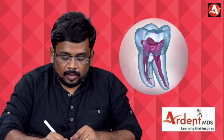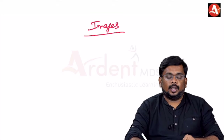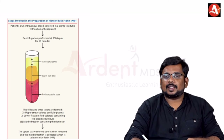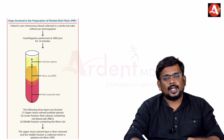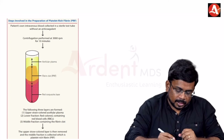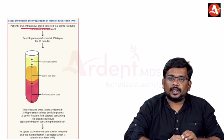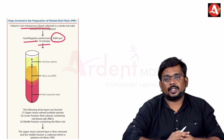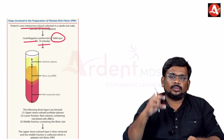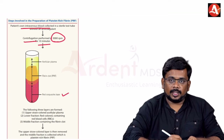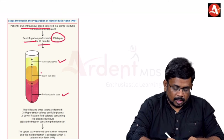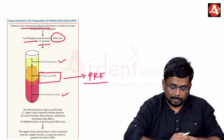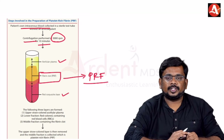Regarding platelet rich fibrin preparation: the patient's own intravenous blood is collected and centrifuged at 3000 rpm for 10 minutes. Three layers are obtained — RBC at the bottom, plasma at the top, and the middle fibrin clot, which is the PRF. This PRF is then separated, placed in a metal container, compressed to form a membrane, and used for regenerative endodontic purposes.